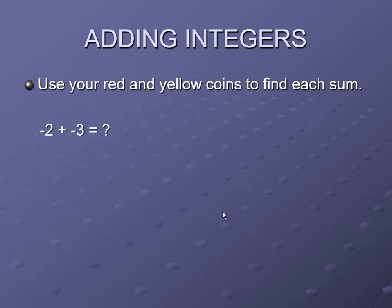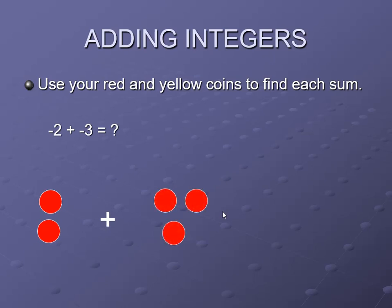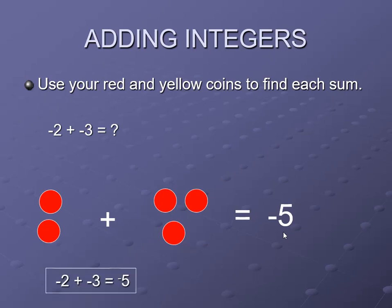Now use your red and yellow coins to find the sum: minus 2 plus minus 3. Here, 2 red coins and 3 red coins give us 5 negative coins total. So the number sentence is minus 2 plus minus 3 equals minus 5.